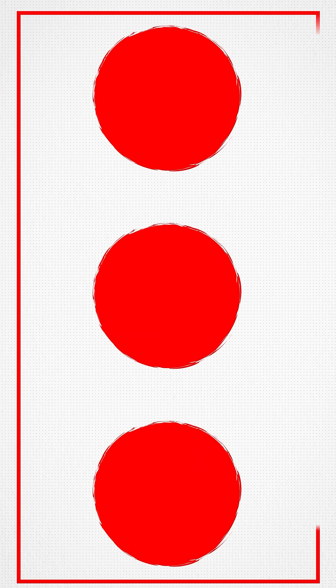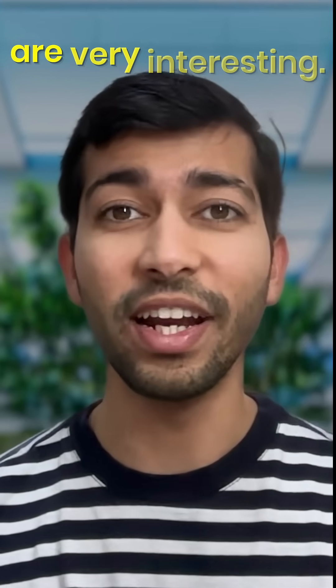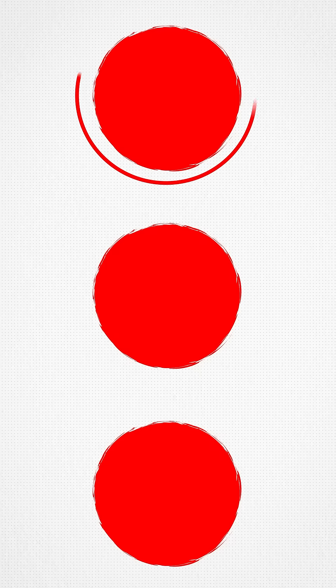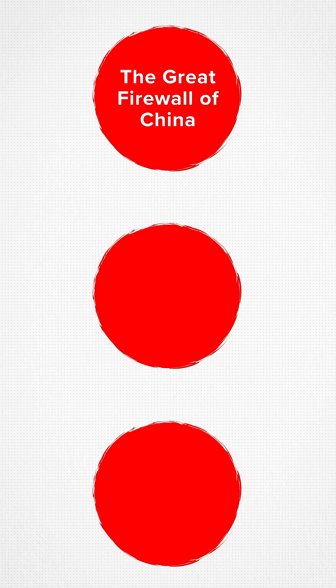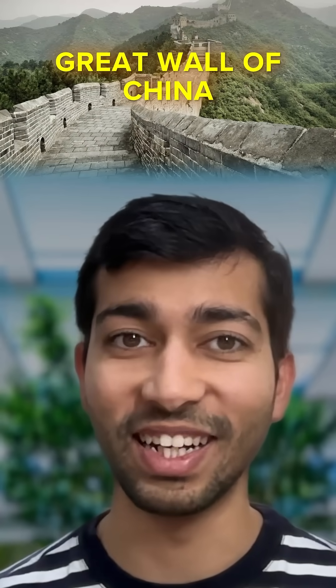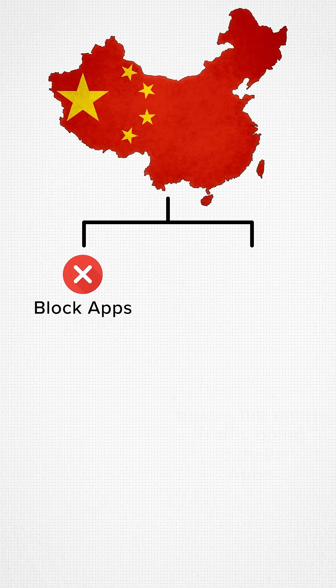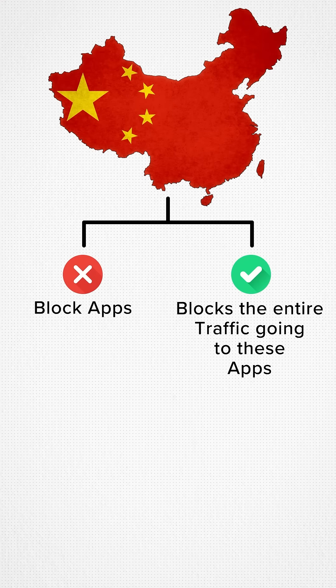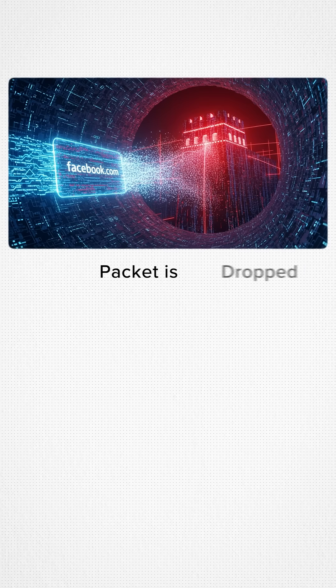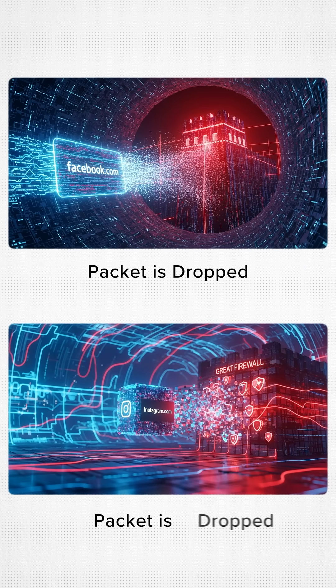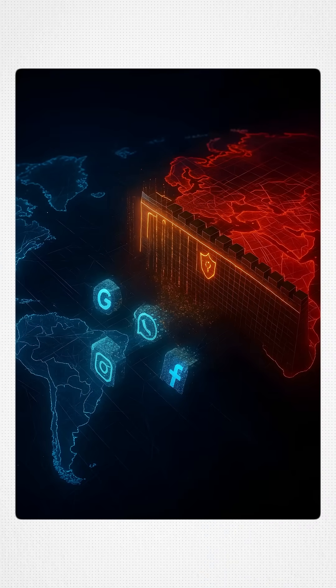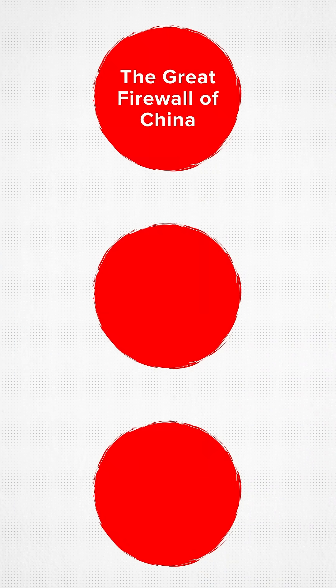There are three ways in which China does it, and all three are very interesting. The first one: the Great Firewall of China. Yes, it's called the Great Firewall of China, not the Great Wall of China. China doesn't block apps — it blocks the entire traffic going to these apps. Facebook.com packet is dropped, Instagram packet dropped. This is a countrywide filter sitting between China and the world.